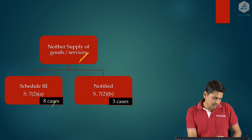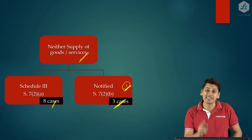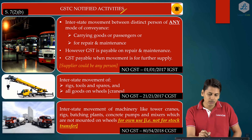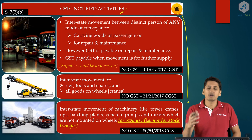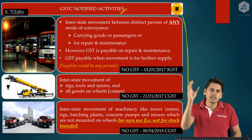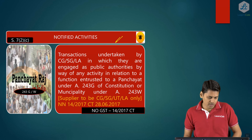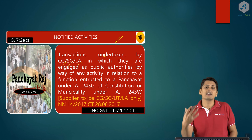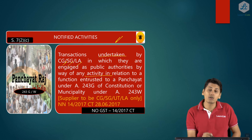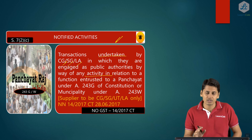Under Schedule 3 there are eight cases, plus notified cases — earlier two, now increased to three. The first notified activity was any interstate movement between distinct persons of modes of conveyances, which was neither a Supply of Goods nor a Supply of Services — though any repair and maintenance done during that movement would still classify as a supply. The second notified activity was any transaction undertaken by the Central Government, State Government, or local authority engaged as a public authority, carrying out activities originally entrusted to a municipality or Panchayat under Article 243W or G of the Constitution.